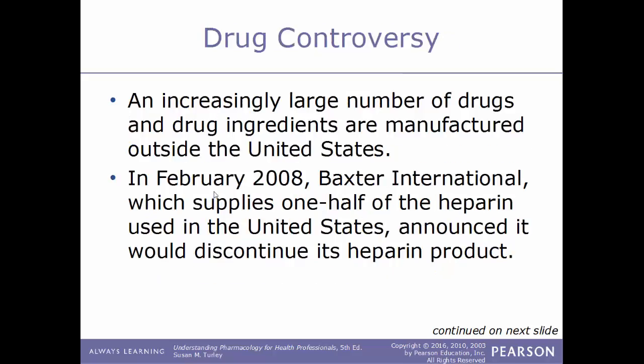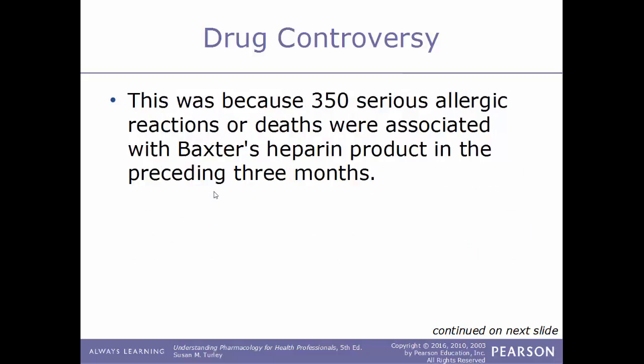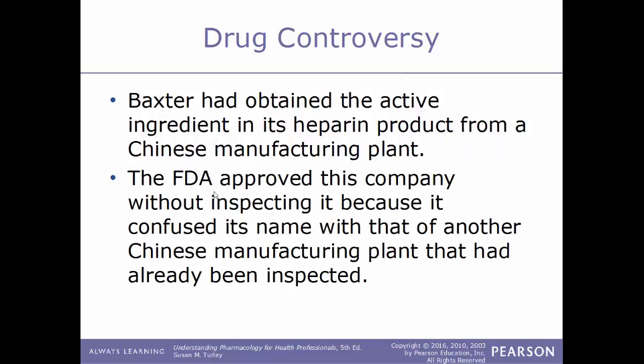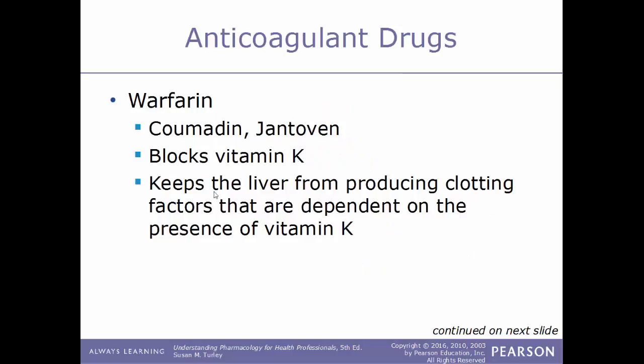Now for a drug controversy: an increasingly large number of drugs and drug ingredients are manufactured outside the United States. In February 2008, Baxter International, which supplies one half of the heparin used in the United States, announced it would discontinue its heparin product. This was due to 350 serious allergic reactions or deaths associated with Baxter's heparin product in the preceding three months. Baxter had obtained the active ingredient from a Chinese manufacturing plant that the FDA approved without inspecting, having confused its name with another already-inspected Chinese plant.